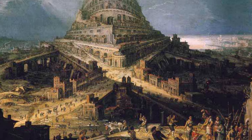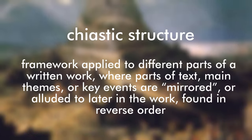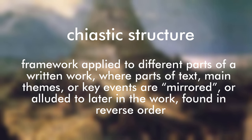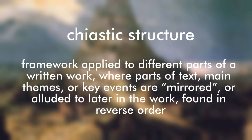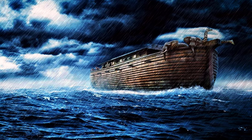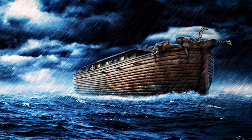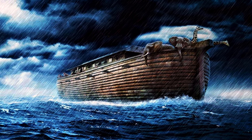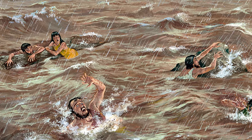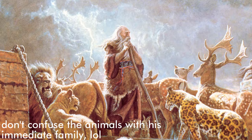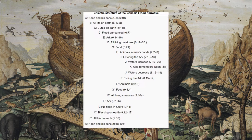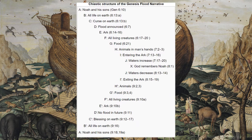The technique in question is known as a chiastic structure. A chiastic structure is a sort of framework applied to different parts of a written work where parts of text, main themes, or key events are mirrored or alluded to later in the work found in reverse order. The Holy Bible contains a few great examples of this, and the one that grabbed my attention the most is the chiastic structure in the account of Noah and the Flood.